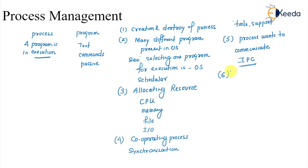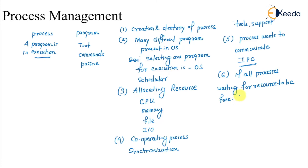The last part of process management is: if all processes are waiting for a resource to be free, then no progress can be made and that leads to a situation called deadlock. Process management also looks into that aspect so that deadlock can be prevented or avoided.